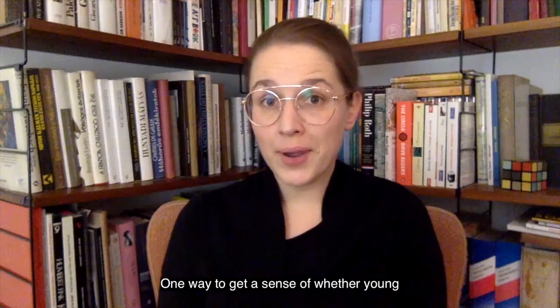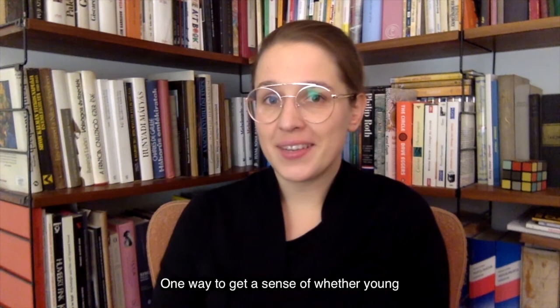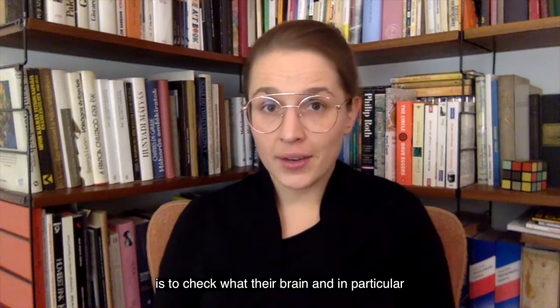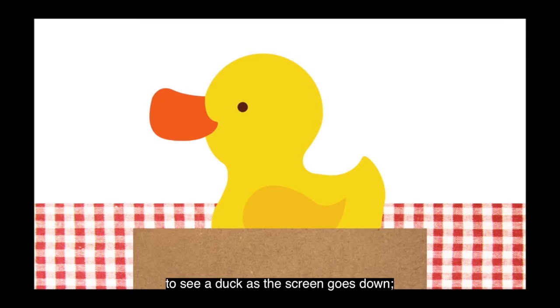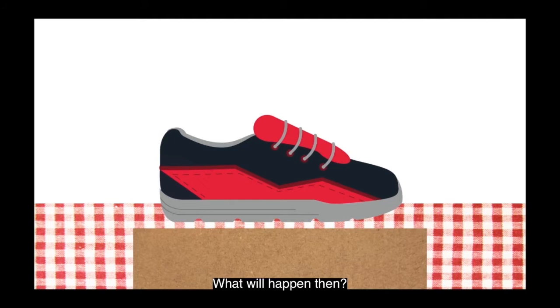So one way to get a sense of whether babies understand words and what kind of words they understand is to have a look at their brain and in particular at what their brain is doing when we label different objects for them. For example, I might point to the screen and say 'there is a duck'. If you understand the word duck, your brain will prepare to see a duck as the screen goes down. However, it might happen that I will say 'there is a duck' but in fact a different object will show up as the screen goes down.